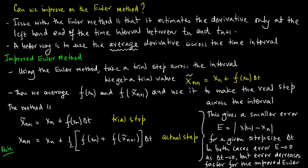The error is proportional to delta t in the Euler method and is proportional to delta t squared in the improved Euler scheme.